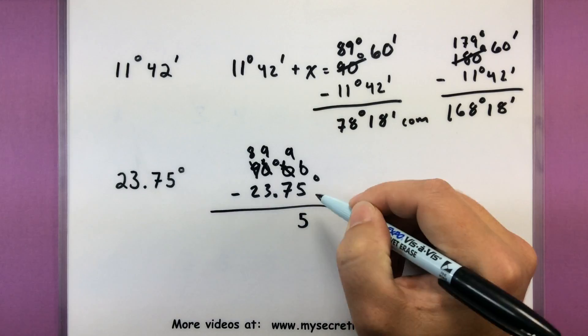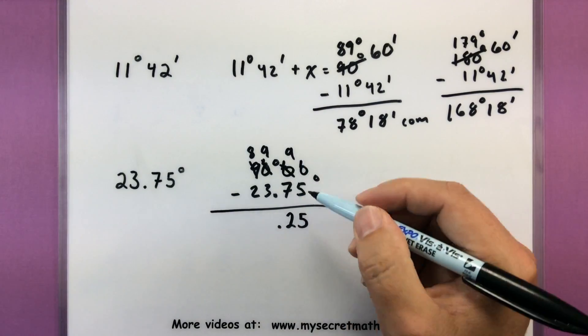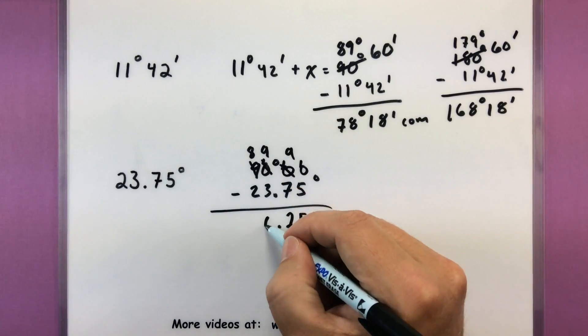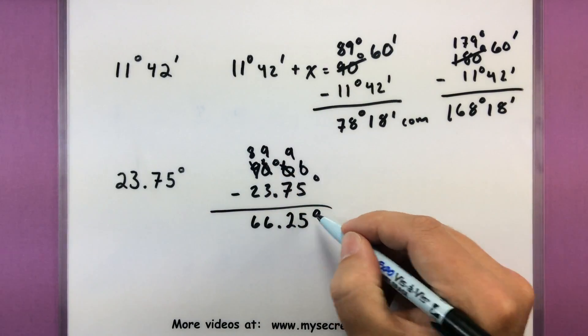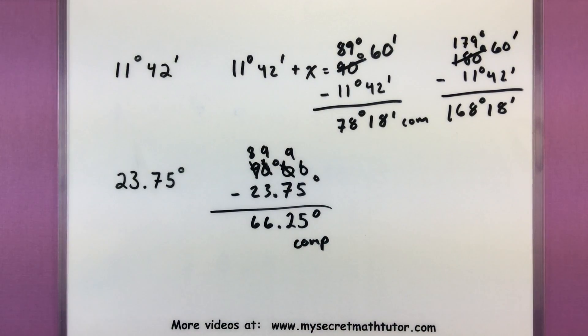And now I can actually go through that subtraction process. So 10 minus 5 is 5. 9 minus 7 is 2. There's 0.25. 9 minus 3 is a 6. And 8 minus 2 is another 6. So my complement to this angle is 66.25 degrees.